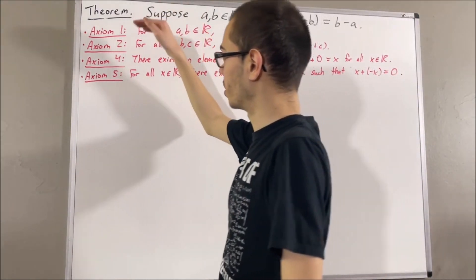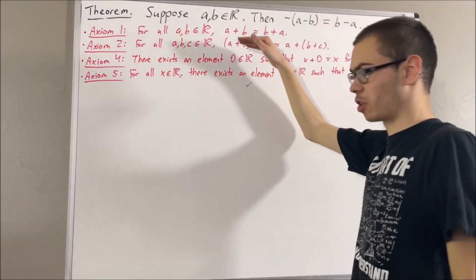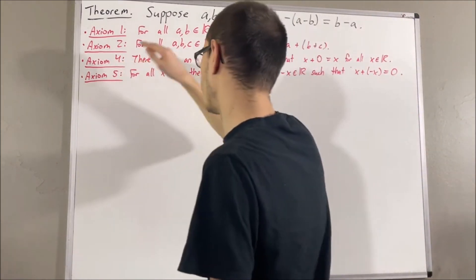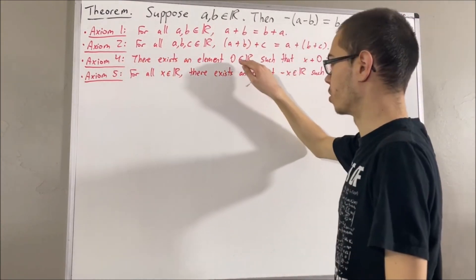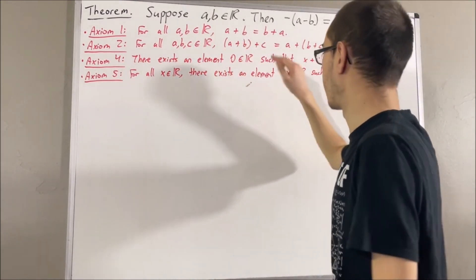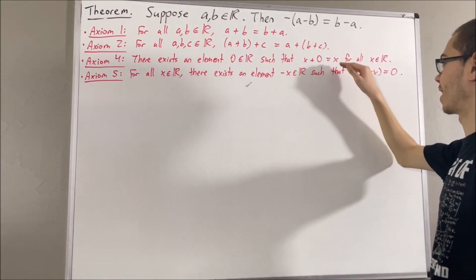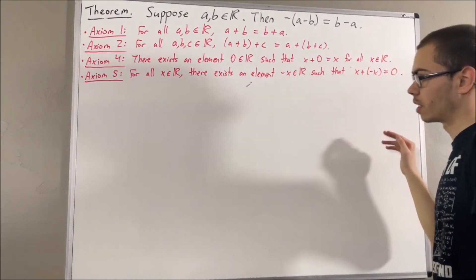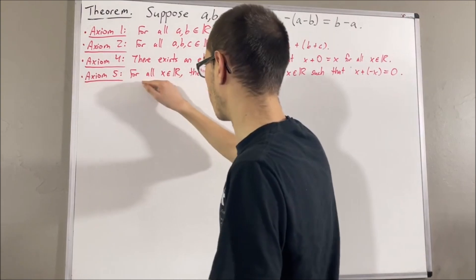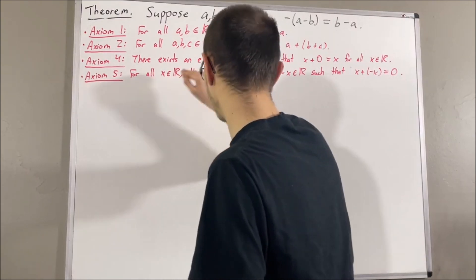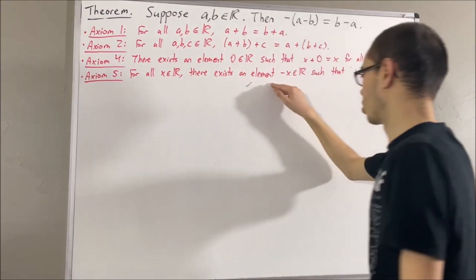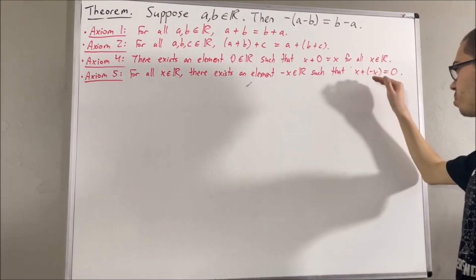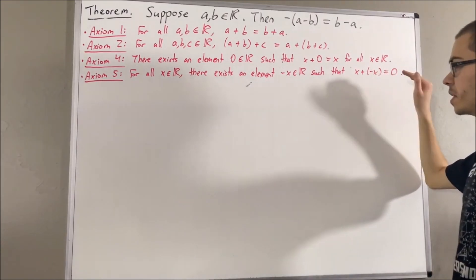Axioms 1 and 2 are just the commutative and associative laws. Axiom 4 tells us that there exists a real number, which we call 0, that has the property that x plus 0 is equal to x, for all real numbers x. And axiom 5 tells us, for all real numbers x, there exists a real number, which we call the negative of x, that has the property that x plus the negative of x is equal to 0.